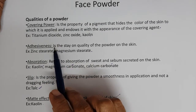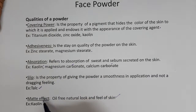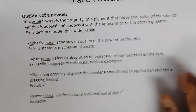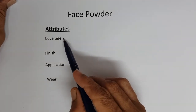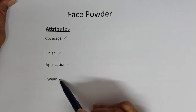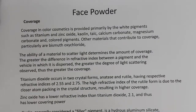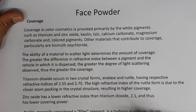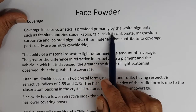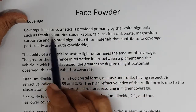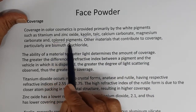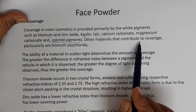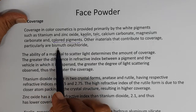To summarize the qualities: covering power, adhesiveness, absorption, slip, and matte effect are the typical qualities of a face powder. Regarding attributes — coverage, finish, application, and wear — coverage in colour cosmetics is provided primarily by white pigments such as titanium dioxide, zinc oxide, kaolin, talc, calcium carbonate, magnesium carbonate, and coloured pigments. Bismuth oxychloride also contributes to coverage. The ability of a material to scatter light determines the amount of coverage.